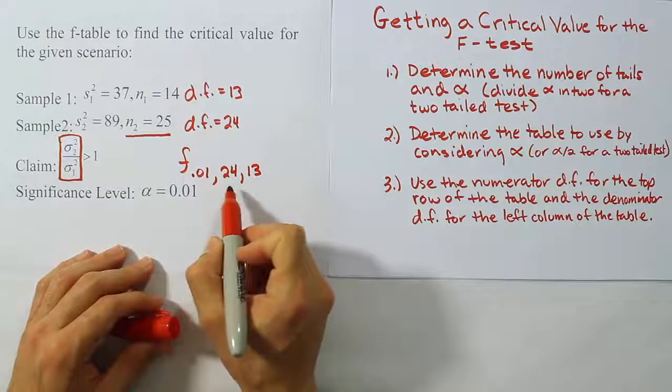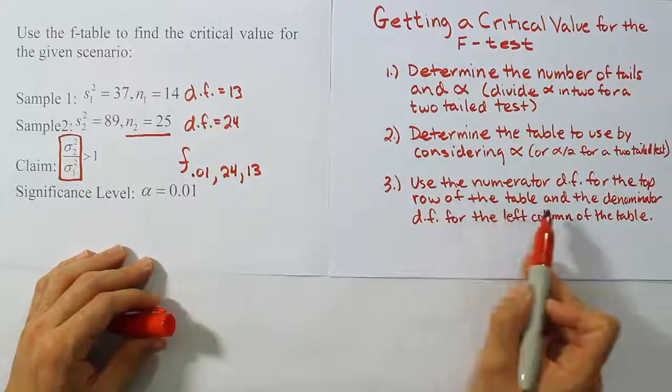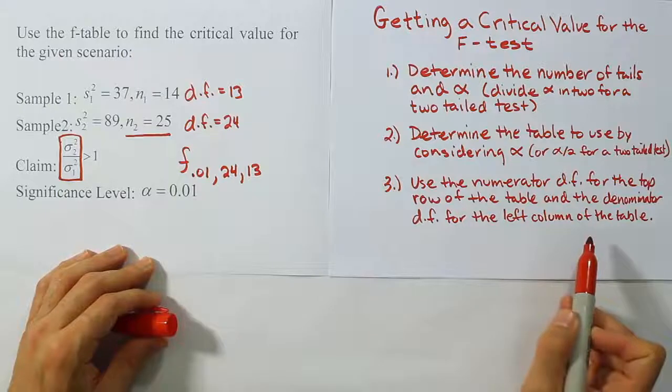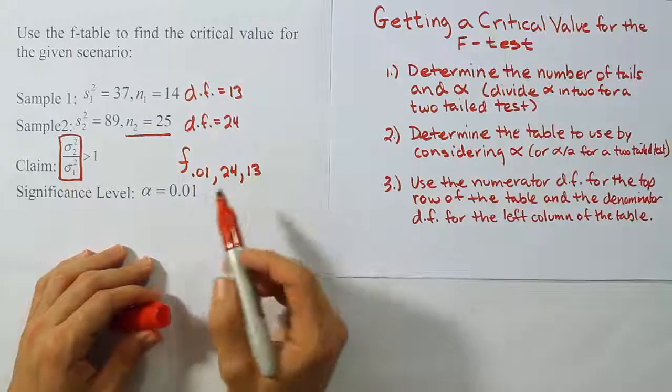24 being the degrees of freedom that will be found on the row on top of the table. And then we're going to look at 13 on the left column of the table. So that's basically what we're going to do as we go there now.